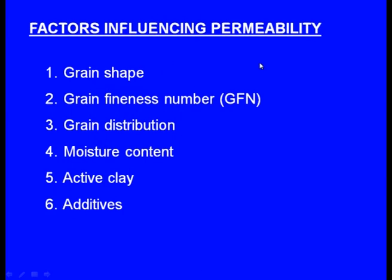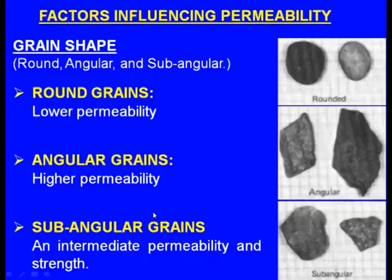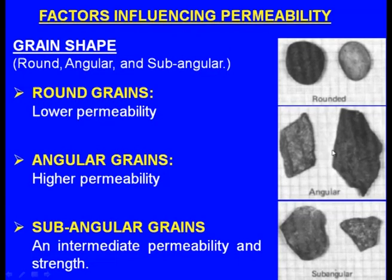The factors influencing permeability are: grain shape, grain fineness number (GFN), grain distribution, moisture content, active clay, and additives. Regarding grain shape, sand grains are broadly classified into three types: round grains, angular grains, and sub-angular grains. Round grains give lower permeability, angular grains give higher permeability, and sub-angular grains give intermediate permeability and strength. A graph of moisture content versus permeability shows that angular grains consistently offer higher permeability than round grains.